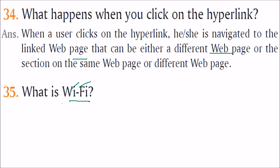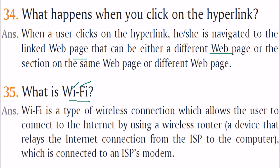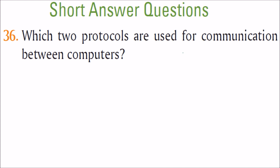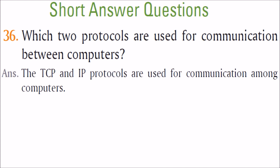WiFi — Wireless Fidelity — is a type of wireless connection that allows the user to connect to the internet using a wireless router. A wireless router is a device that relays the internet connection from an ISP to your computer. A modem is a modulator-demodulator. Two protocols used for communication between computers are TCP — Transmission Control Protocol — and IP — Internet Protocol.